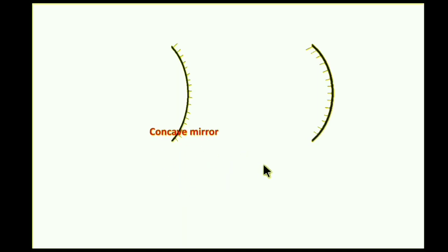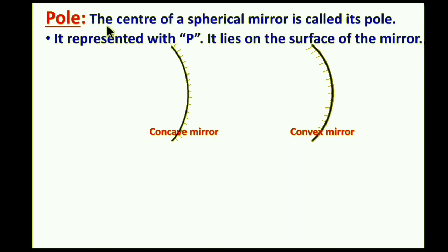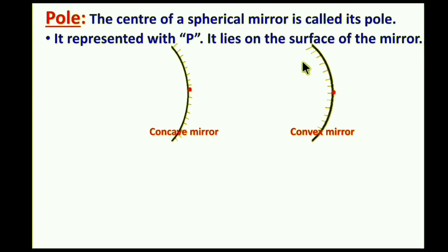Now, to explain more important terms, we consider both concave and convex mirrors. The first term is pole. The center of a spherical mirror is called its pole. It is represented by P, and it lies on the surface of the mirror. The center point of the concave mirror and the center point of the convex mirror are both called the pole P.